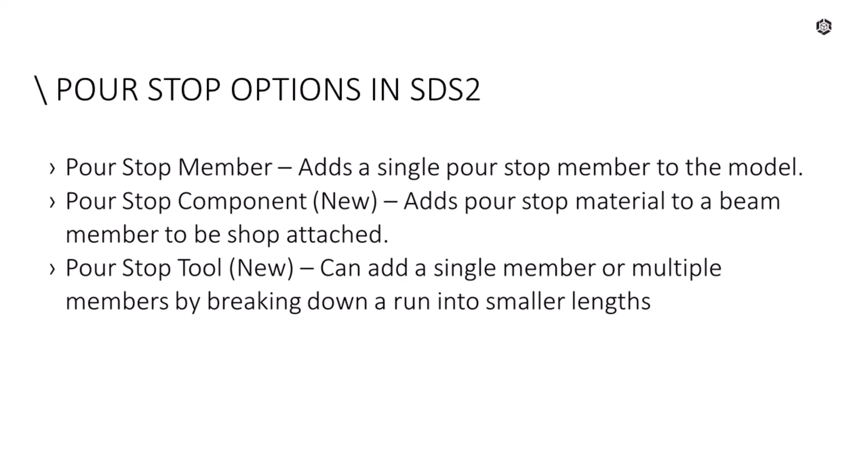The Pore Stop component, which is new to version 23, is going to add Pore Stop materials to a beam. What you'll see with all three of these tools is that the interface is almost identical. The difference with the component is that you have the ability to break that material up into shorter lengths based on whatever maximum or minimum lengths you want, and then it adds that as a material to the beam member — replacing the old school way of just adding a bent plate.